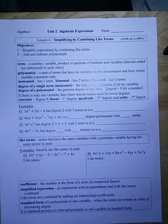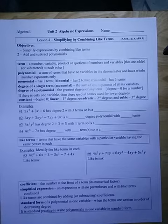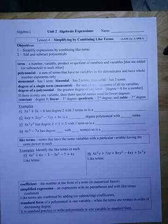Algebra 1, Unit 2, Lesson 4: Simplifying by Combining Like Terms. In this lesson we want to simplify expressions by combining like terms and then add and subtract polynomials.